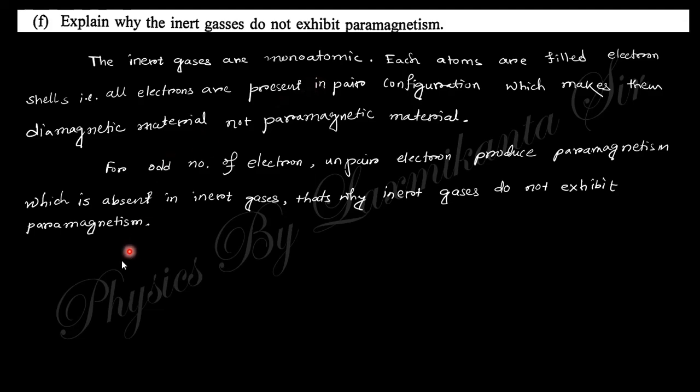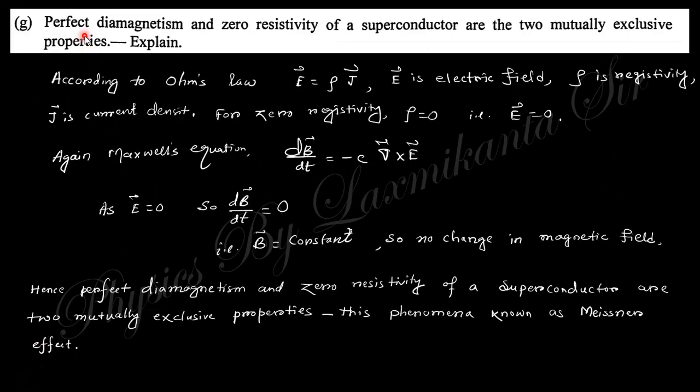Next question: Perfect diamagnetism and zero resistivity of a superconductor are two mutually exclusive properties. Actually, according to Ohm's law, you know j = sigma·E or E = rho·j, where j is current density, E is electric field, and rho is resistivity. If resistivity is zero, then electric field is zero. From Maxwell's equation, del B/del t = -c curl E, where c is speed of light. So if E is zero, then dB/dt equals zero, so B equals constant. There is no change in magnetic field within this material. That is diamagnetism. In diamagnetic material, there is no internal magnetic field. So superconductors have diamagnetism and zero resistivity, which are exclusive properties, and this effect is known as the Meissner effect.